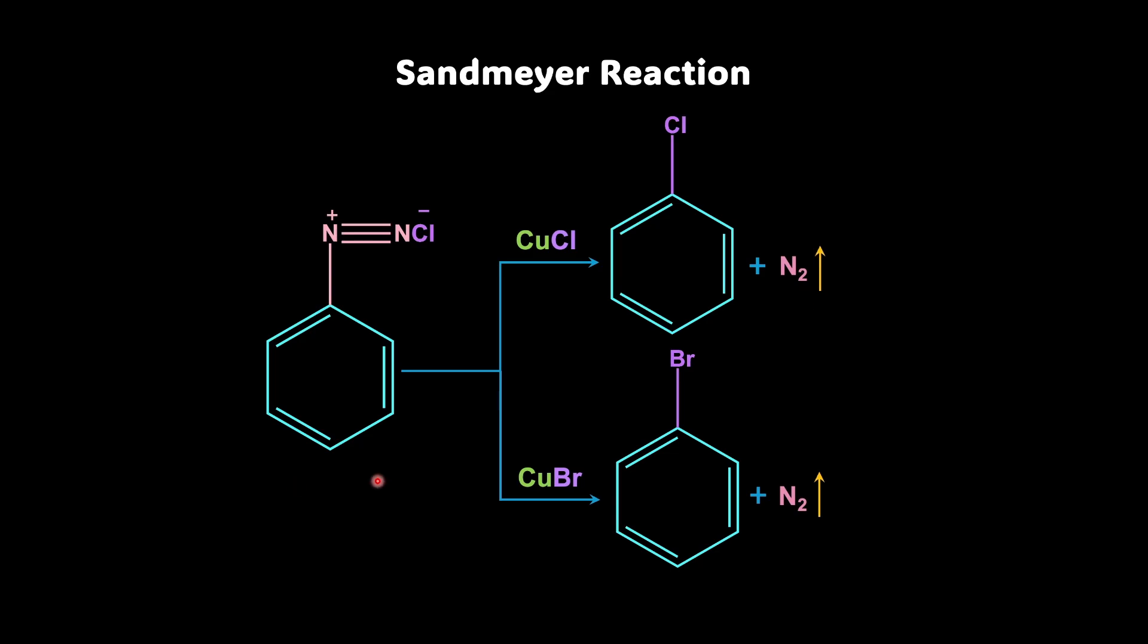BDC is now reacted with cuprous chloride to obtain chlorobenzene and you can see nitrogen gas is evolved out. Similarly, if in BDC we add cuprous bromide, we get bromobenzene and again nitrogen gas is evolved out. So we can say that at the place of this N2+ Cl-, what is coming? A chloro group is coming. So what kind of a reaction is it? We can say it is a substitution reaction.